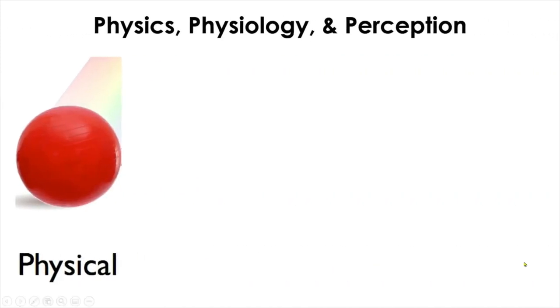According to Fechnerian psychophysical world, there are three components that are related to each other. First, there are external stimuli being perceived by the observer, which is categorized as physics. Here, the external stimulus is a ball reflecting the red color from the visible spectrum of light.